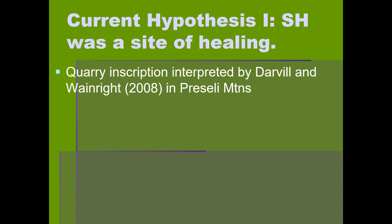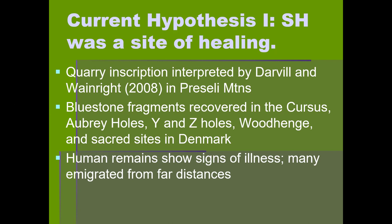The first current hypothesis is that Stonehenge was actually a site of healing — a kind of ancient Lourdes. Lourdes is a place in France supposedly associated with holy water believed to have healing properties. Two archaeologists, Tim Darvill and Wainwright, in 2008 found a quarry inscription in the Preseli Mountains — where the blue stones originated — and claim that it indicates the Preseli Mountains had some sort of magical healing properties.